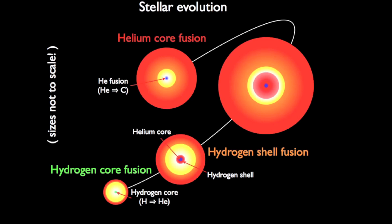A low mass star eventually expands into a red giant and its core collapses down into a helium-fusing core. That helium fuses into carbon and oxygen. When the core is completely carbon and oxygen with no helium remaining, a low mass star won't be able to fuse anything further — gravity cannot crush the carbon and oxygen to a dense and hot enough state to trigger nuclear reactions. This is the end of the red giant phase.